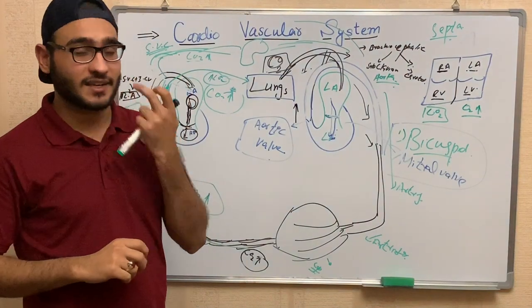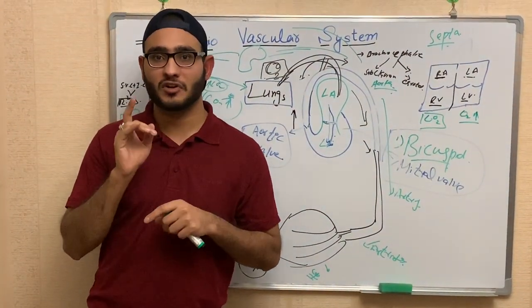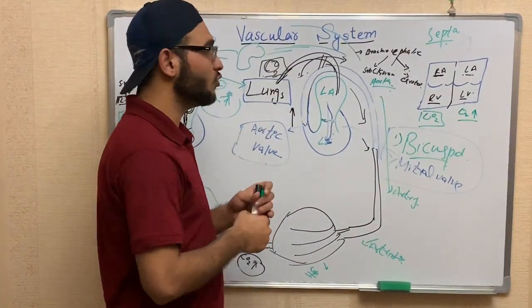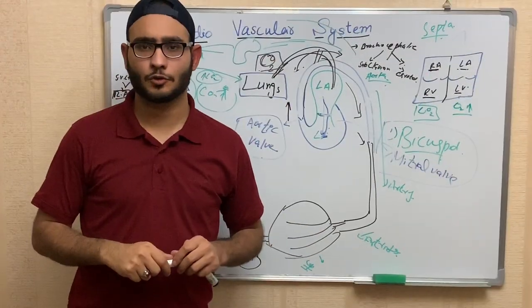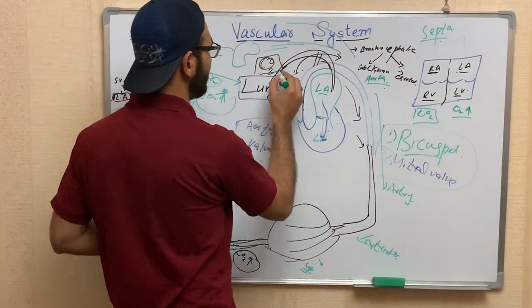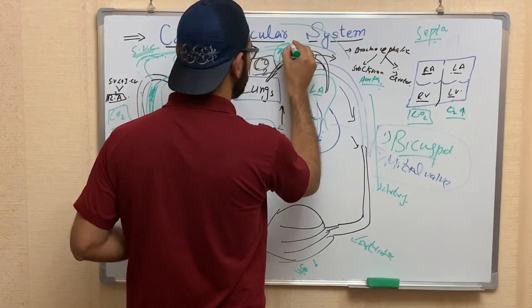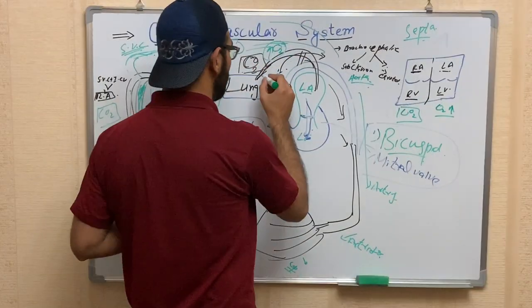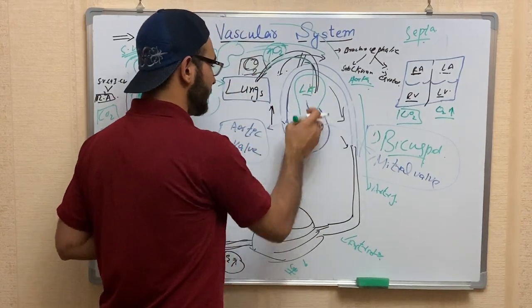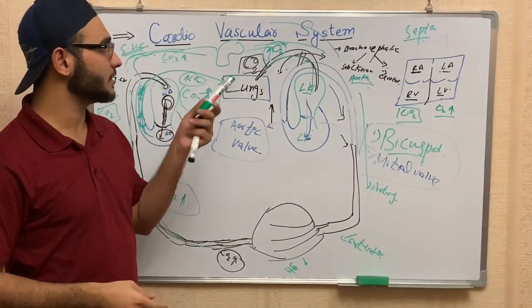The pulmonary vein is one of the exceptions — it is a vein that supplies blood toward the heart carrying oxygenated blood. Through the pulmonary vein, blood enters the left atrium with a high concentration of oxygen. From the left atrium, blood goes to the left ventricle, and then all over the body — completing the cardiovascular circuit.